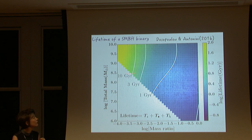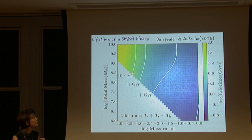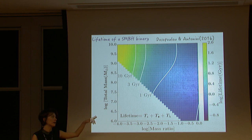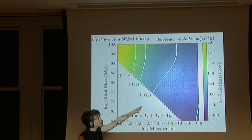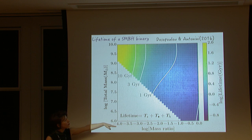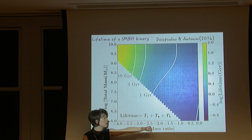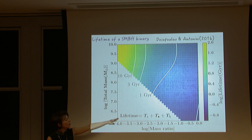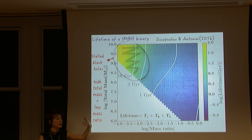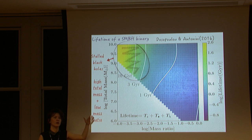Plotting the lifetime as a function of total binary mass and mass ratio — with color depicting lifetime — I find that for equal mass ratios there is no final parsec problem. But for minor mergers (low mass ratio) in massive galaxies with shallow density profiles, the lifetime can exceed the Hubble time. This means these low-mass-ratio binaries in core elliptical galaxies will stall because their lifetime simply exceeds the Hubble time.